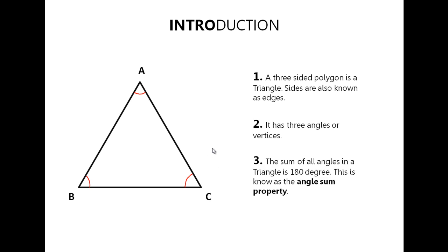The sum of all the angles in a triangle is 180 degrees. That is, angle A plus angle B plus angle C is equal to 180 degrees. This property of the triangle is known as the angle sum property, and all triangles follow this property.